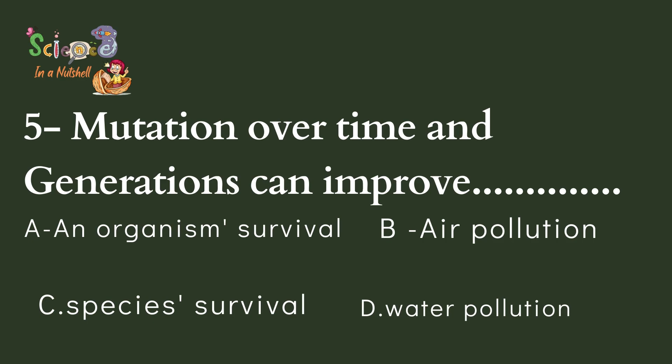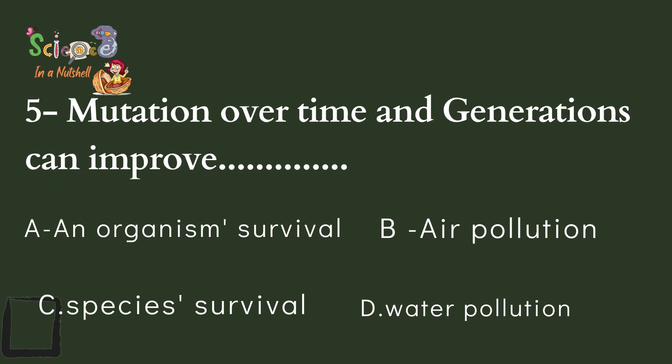Number five: Mutations over time and generations can improve — improve means to make better — an organism's survival, air pollution, a species' survival, or water pollution? Species means a group of animals, so the mutation will help a group of animals to be able to survive and have better survival chances. The answer is C — species' survival, a group of living organisms having better chances to survive.